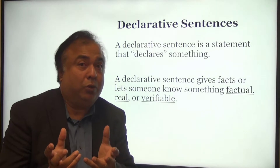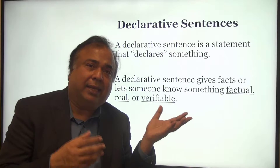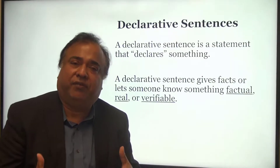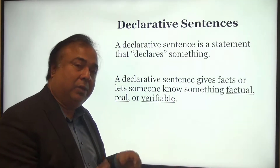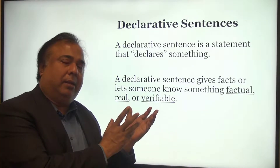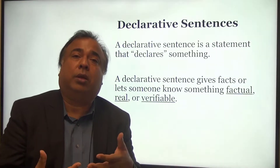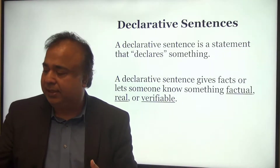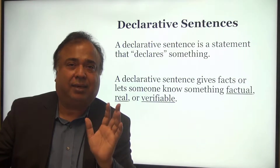So the definition of a declarative sentence is: it's a statement that declares something. Now what is that something? As Dr. Lane pointed out, it declares a fact — something that is verifiable, something that is real, something that is objective. Not someone's opinion. Not subjective. A declarative sentence is a statement of facts, so the examples are all going to be facts, not opinions.